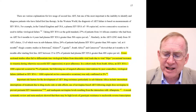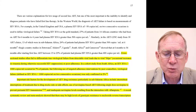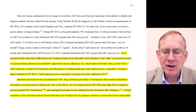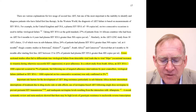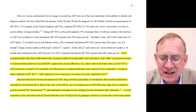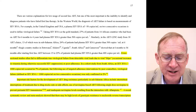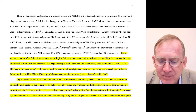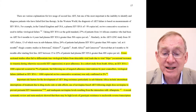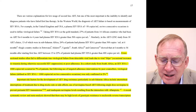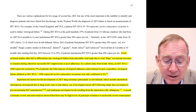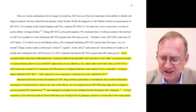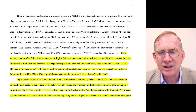On page 17, there's quite a lot of addition because one of the reviewers wanted us to expand on cross-sectional studies. The additional text reads: 'Cross-sectional studies often fail to differentiate true virological failure from detectable viral loads due to viral blips (occasional increases in viremia during otherwise successful HIV suppression) or poor adherence. In a cohort study from South Africa, an HIV RNA more than 1,000 copies per ml occurred in 7% of patients. But following use of targeted adherence interventions by peer counsellors, virological failure — defined as HIV RNA more than 1,000 copies per ml on two consecutive occasions — was only confirmed in 2%.'